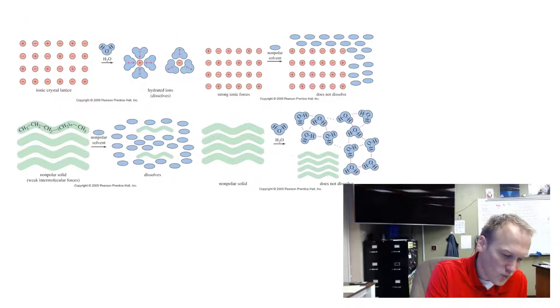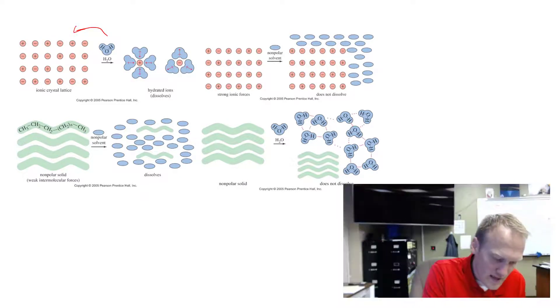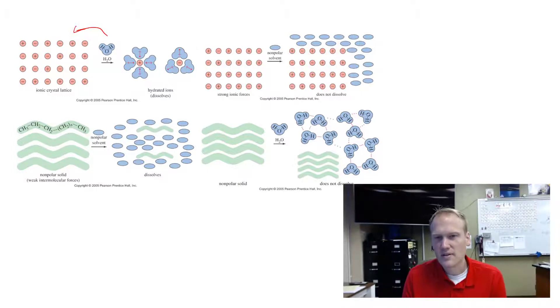This is just a graphic showing how water will dissolve ionic substances because you have the positive and negative cation. Where with a non-polar covalent substance, it's not going to dissolve well in water because you don't have the positive and negative end. Simply remember, like dissolves like. Polar things will dissolve other polar things, and non-polar things will dissolve other non-polar things.